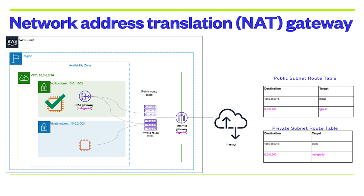When you create a NAT Gateway, you must specify the public subnet in which the NAT Gateway should reside. You must also specify an Elastic IP address to associate with your NAT Gateway. After you create a NAT Gateway, you must update the route table associated with one or more of your private subnets to point Internet-bound traffic to the NAT Gateway, so that instances in your private subnets can communicate with the Internet.